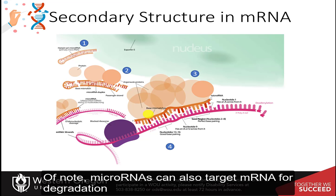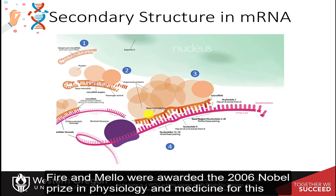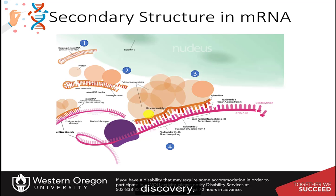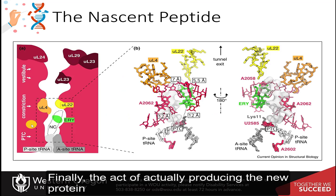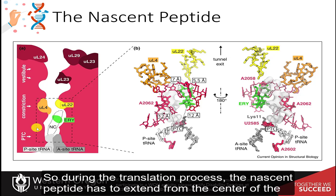Of note, microRNAs can also target messenger RNAs for degradation and serve as a regulatory mechanism for protein production. Fire and Mellow were awarded the 2006 Nobel Prize in Physiology and Medicine for this discovery. Finally, the act of actually producing the new protein can also regulate its production.